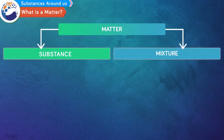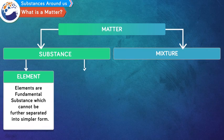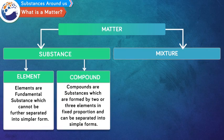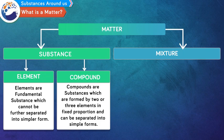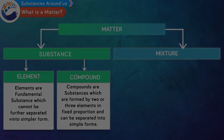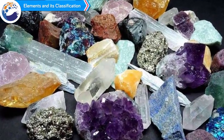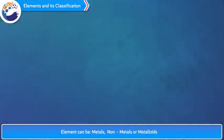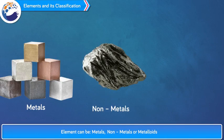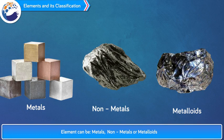Substances that we come across daily are further classified as elements and compounds. Elements are fundamental substances which cannot be further separated into simpler form, whereas compounds are substances which are formed by two or three elements in fixed proportion and can be separated into simple forms. Elements and their classification: elements can be metals, non-metals, or metalloids depending upon their physical and chemical properties.